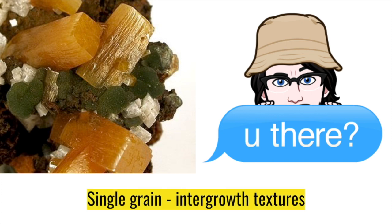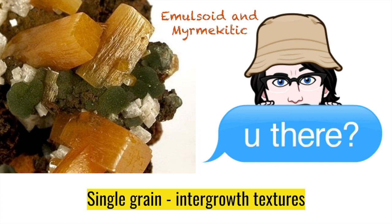Let's move on to intergrowth textures. We have two common variants: emulsoid and myrmekitic textures. Emulsoid texture, or an emulsion, resembles exsolution texture — it takes the form of one mineral finely disseminated in another more abundant mineral. Genetically, it can be treated as a micro-component that may have been trapped during crystallization, or it could represent incomplete replacement. Myrmekitic texture is an interfingering texture also known by various names such as eutectic, cotectic, granophyric and graphic texture. It is more common in silicate rocks than in ore-forming minerals. It appears as the growth of two or more minerals in variable amounts with mutually rounded boundaries.